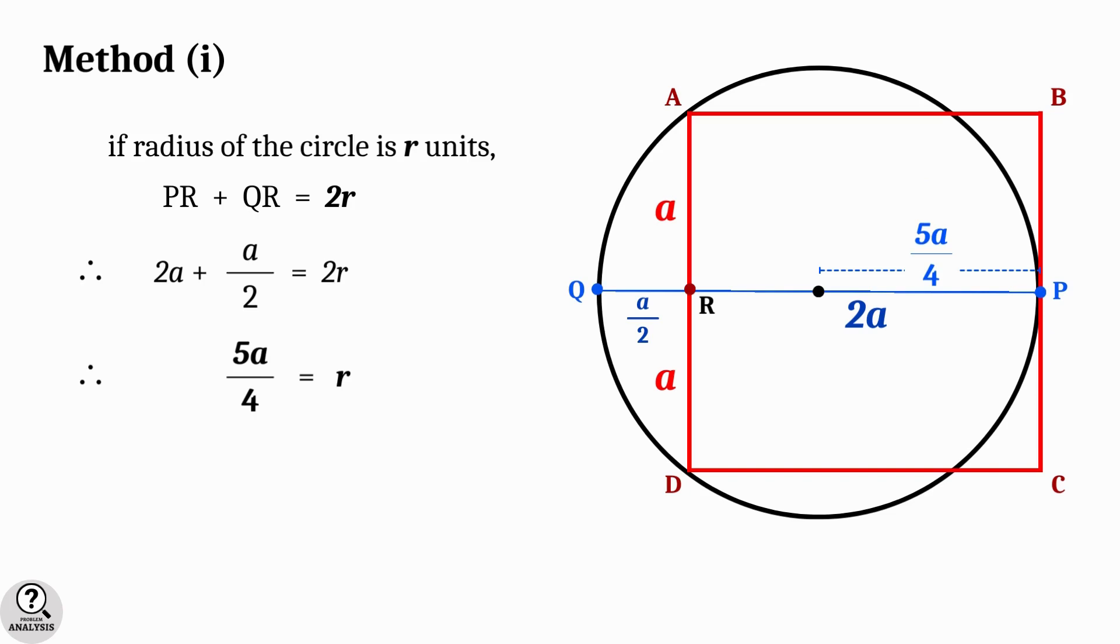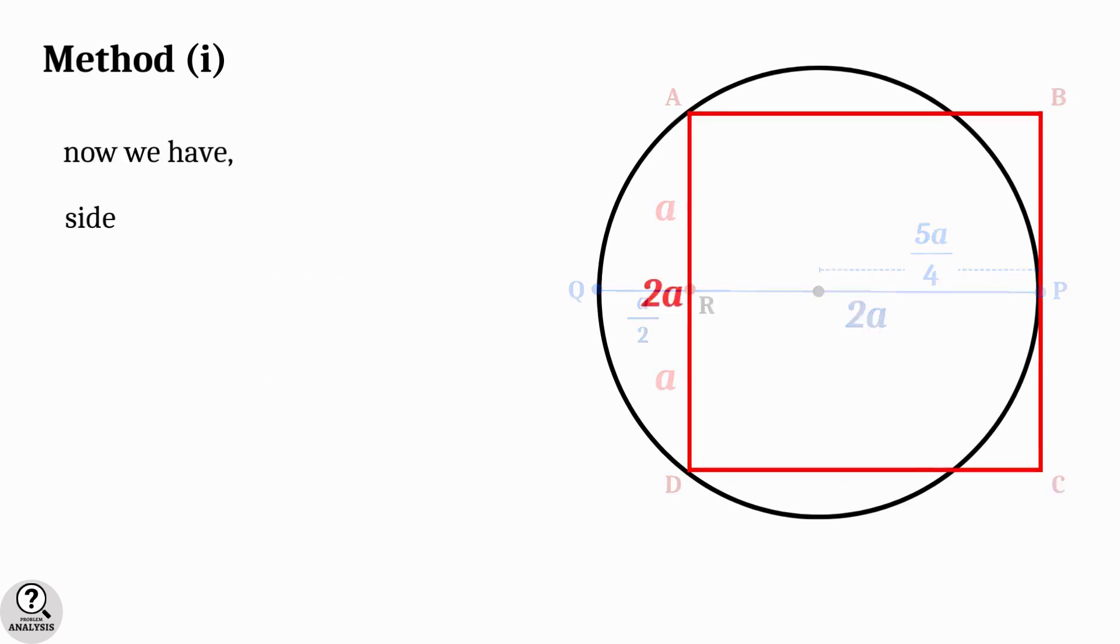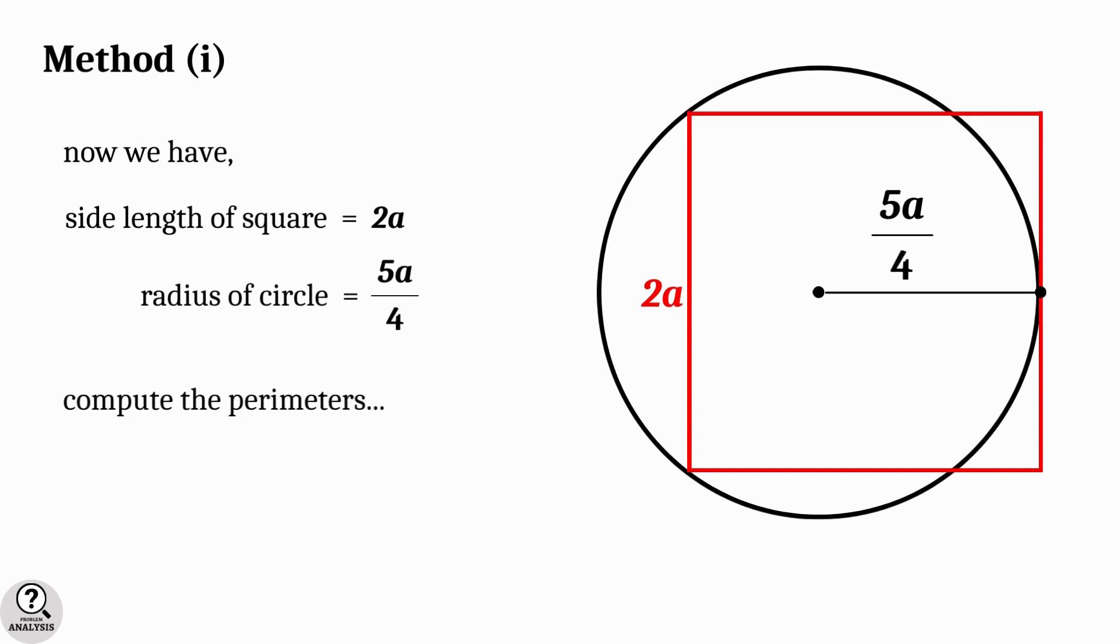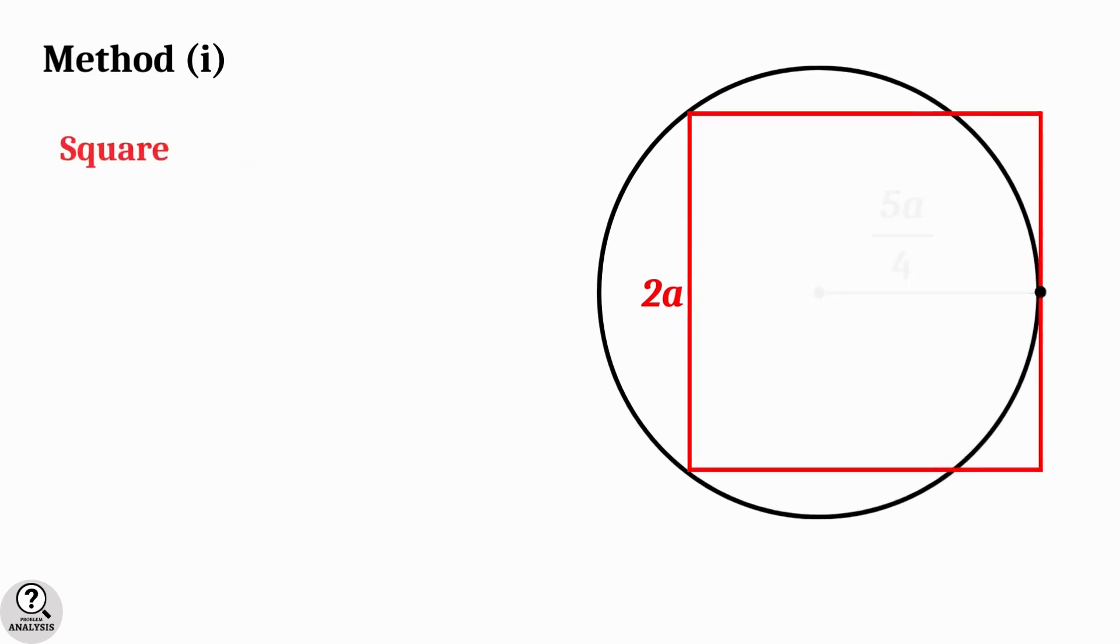That means 2a plus a by 2 is equal to 2R, and therefore radius of the circle is equal to 5a by 4. So now we have side length of the square is 2a and radius of the circle is 5 by 4 times a.